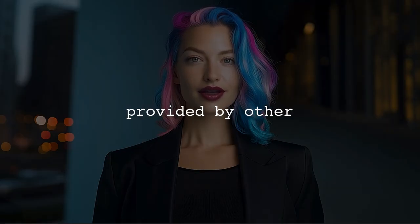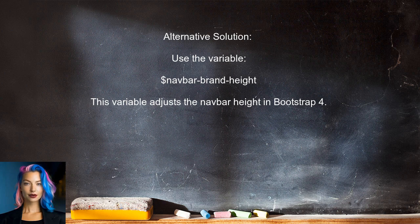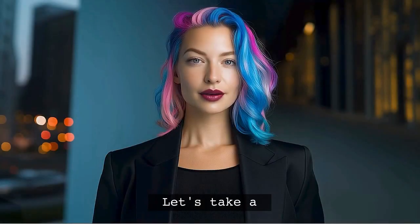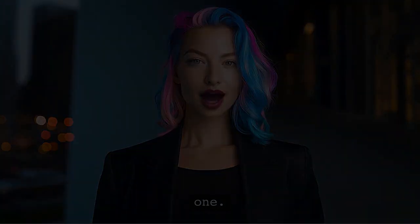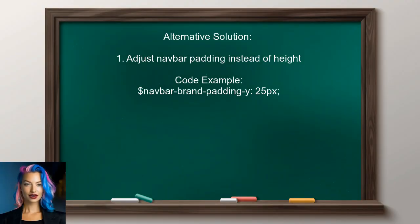Now let's look at the answers provided by other users. An alternative solution suggests using the variable `$navbar-brand-height`, which can be utilized to adjust the height of the navbar in Bootstrap 4. Another user suggests adjusting the navbar's padding instead of its height, recommending setting the `navbar-brand-padding` to 25 pixels.